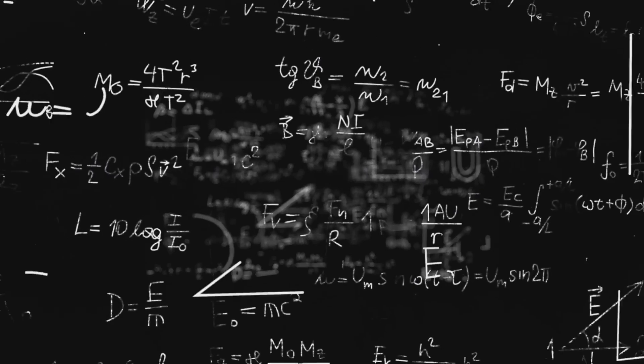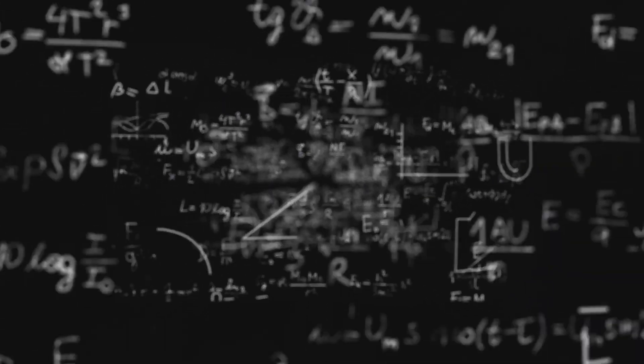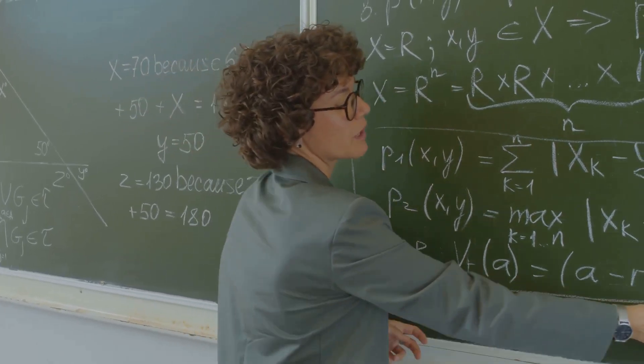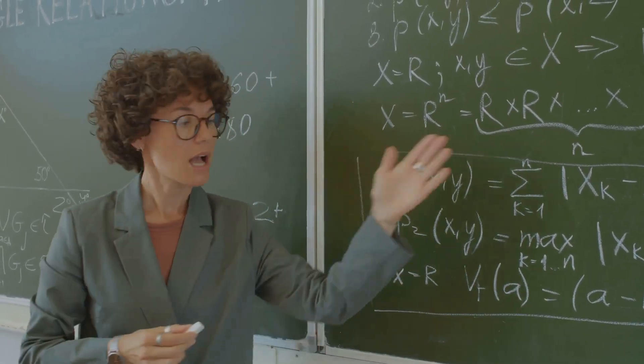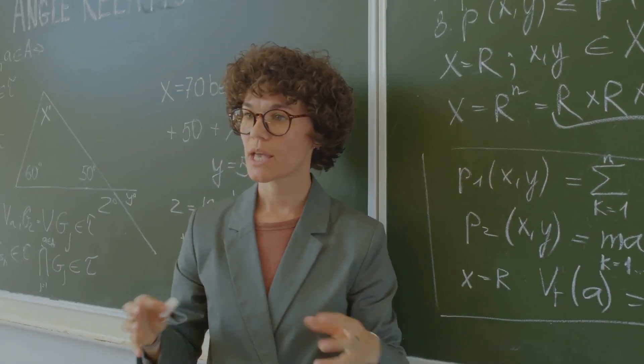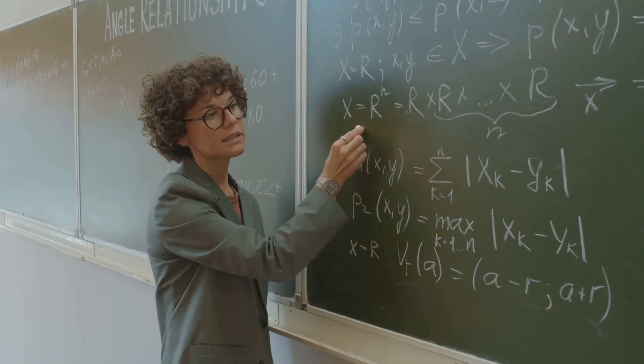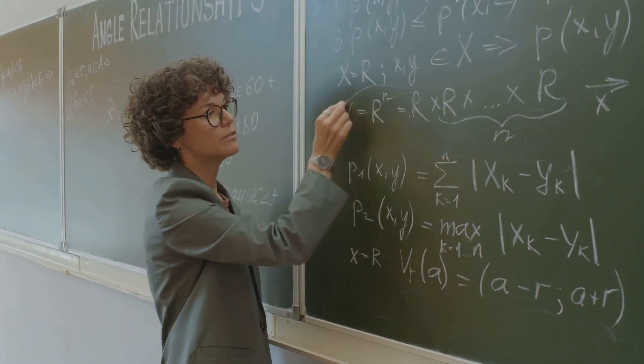Sounds easy, right? Well, that's essentially what the Goldbach Conjecture is all about. This mathematical riddle was first proposed by a German mathematician named Christian Goldbach in the 18th century. He put forth the idea that every even integer greater than two can be expressed as the sum of two prime numbers.